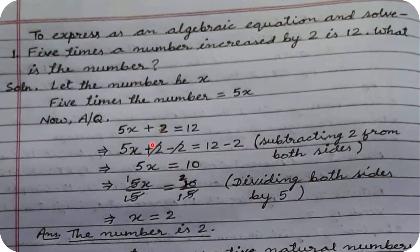After subtracting 2 from both sides: 2 minus 2 is zero, so nothing is left. Only 5x remains on the left hand side. On the right hand side, 12 minus 2 gives 10. Now we need to find the value of x — there is a 5 multiplying with it.